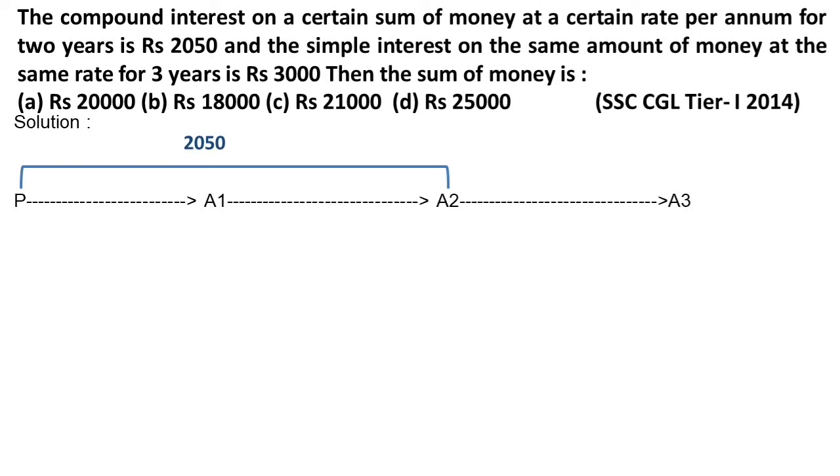So this is our compound interest given here as Rs 2050. And here we have simple interest, which I've denoted with brackets. We're talking about three years, so this arrow covers up to here. So this is CI for two years, Rs 2050, and SI for three years is Rs 3000.